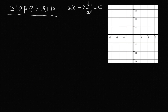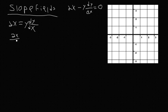Here's one more — this one depends on both y and x. So let's try and figure this one out. First we notice that dy/dx is not isolated, and we are trying to plot dy/dx, so we need to solve for dy/dx. So we're going to move the y dy/dx term to the other side, giving us 2x equals y dy/dx. Then we divide both sides by y, so 2x over y is equal to dy/dx.